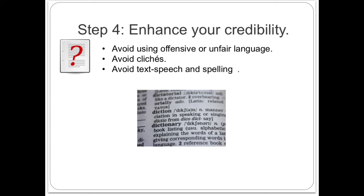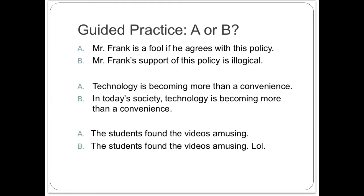The final step is to establish your credibility as a writer by avoiding language that may offend or is unfair, by avoiding overused clichés, and by avoiding words and spelling that you may use when you text. Remember that academic writing is formal writing. Let's practice one last time by reading these three pairs of sentences. In each pair, one sentence has poor word choice and one sentence has appropriate word choice. Pause the video to read each pair and determine which one is the better choice. Restart the video when you are finished.